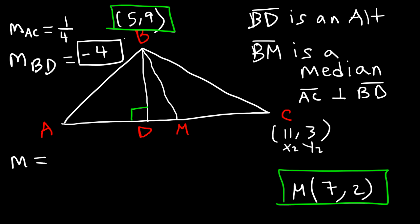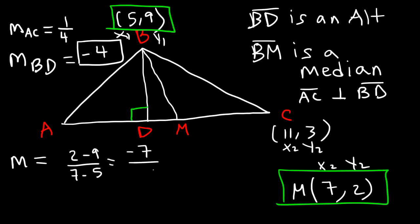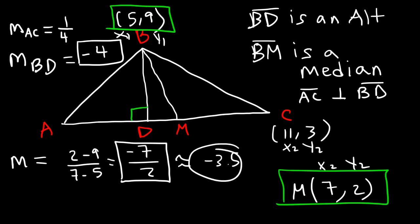Let B (5, 9) be (x1, y1) and M (7, 2) be (x2, y2). Y2 is 2, y1 is 9, x2 is 7, x1 is 5. 2 minus 9 is negative 7, and 7 minus 5 is 2. So the slope is negative 7 over 2, which as a decimal is negative 3.5. In this example, the slope of the median is negative 3.5 and the slope of the altitude is negative 4. Now you know how to calculate the slope of these two lines.